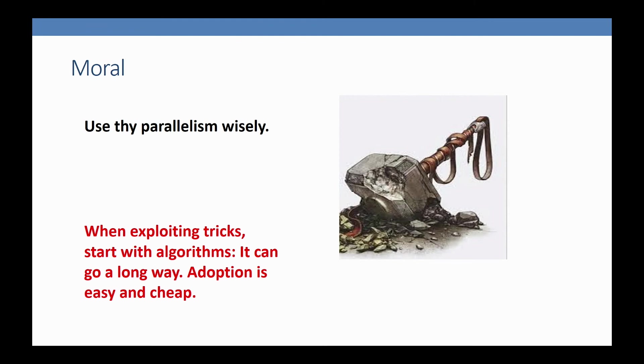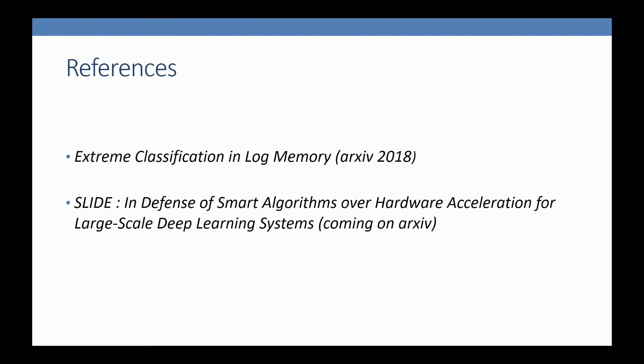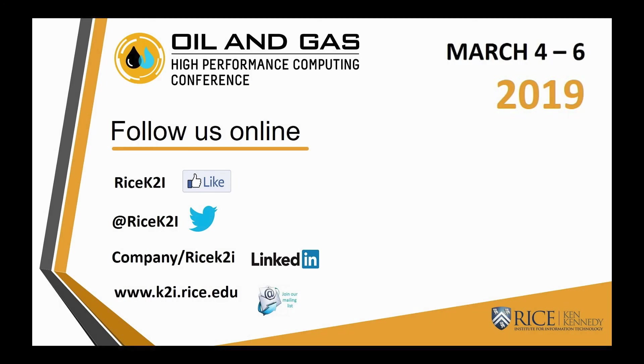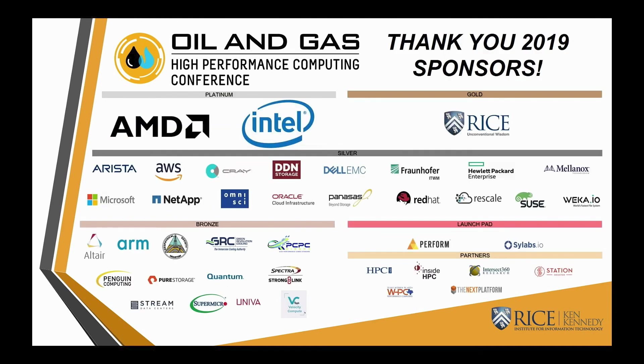I'll stop with that. The moral of the story is we should use our parallelism wisely. When exploiting tricks, let's start with the algorithm once because it can go a long way. Adoption is easy and cheap. Here are the references. Thank you.